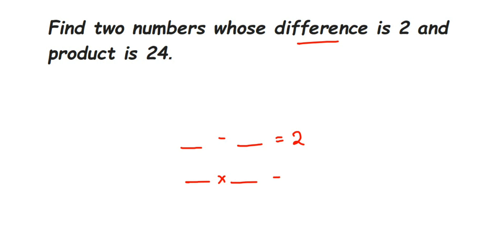Since the product is equal to 24, we have to find the factors of 24. From those factors, we need to find a combination where subtracting the two numbers gives 2. So let's find out the factors of 24.